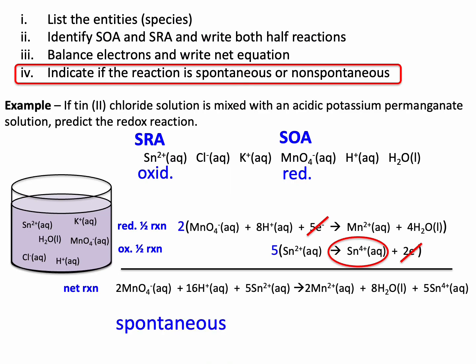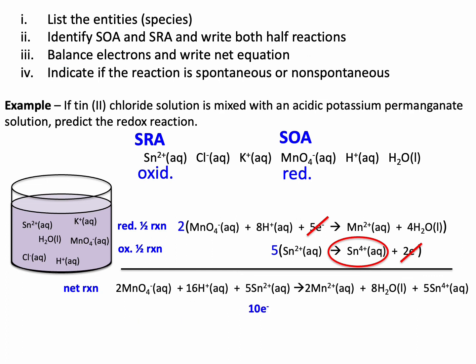All that's really happening here is five tins are just throwing away ten electrons over to permanganate. The tin ion is oxidizing, throwing away electrons. Permanganate is grabbing electrons. And there you go.